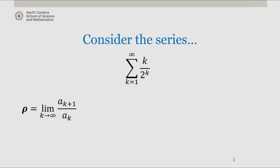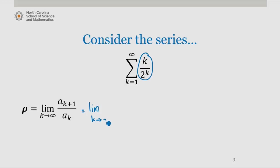Consider this first example from k equals 1 to infinity of k over 2 to the k. Rho is the limit as k approaches infinity of a sub k plus 1 over a sub k. Since a sub k is k over 2 to the k, we write the limit as k approaches infinity of k plus 1 divided by 2 to the k plus 1, all divided by k divided by 2 to the k.